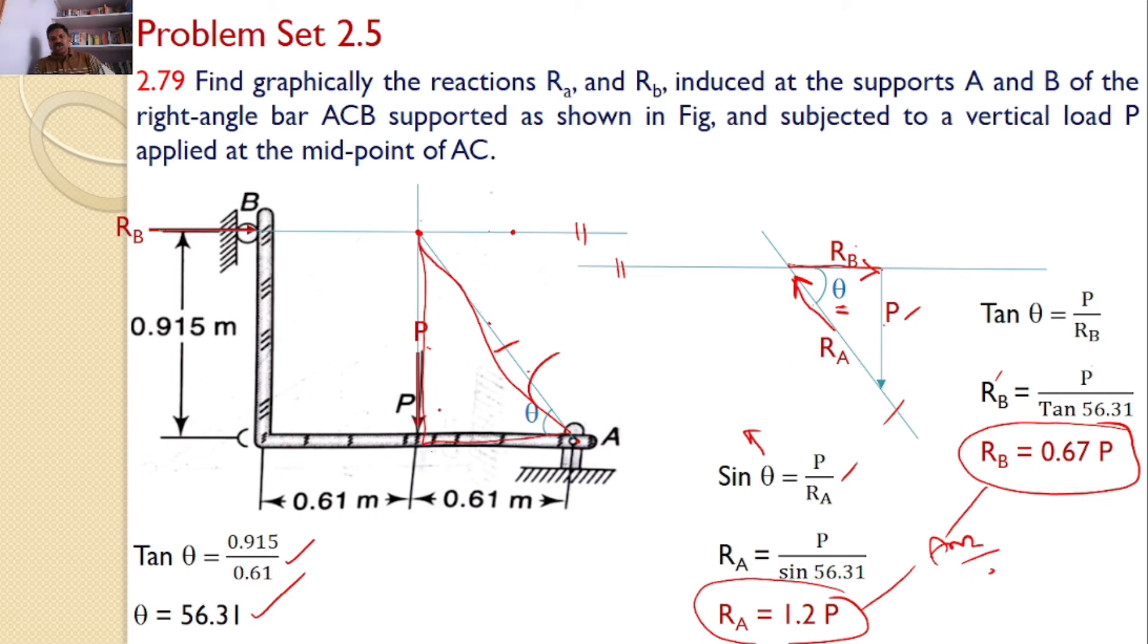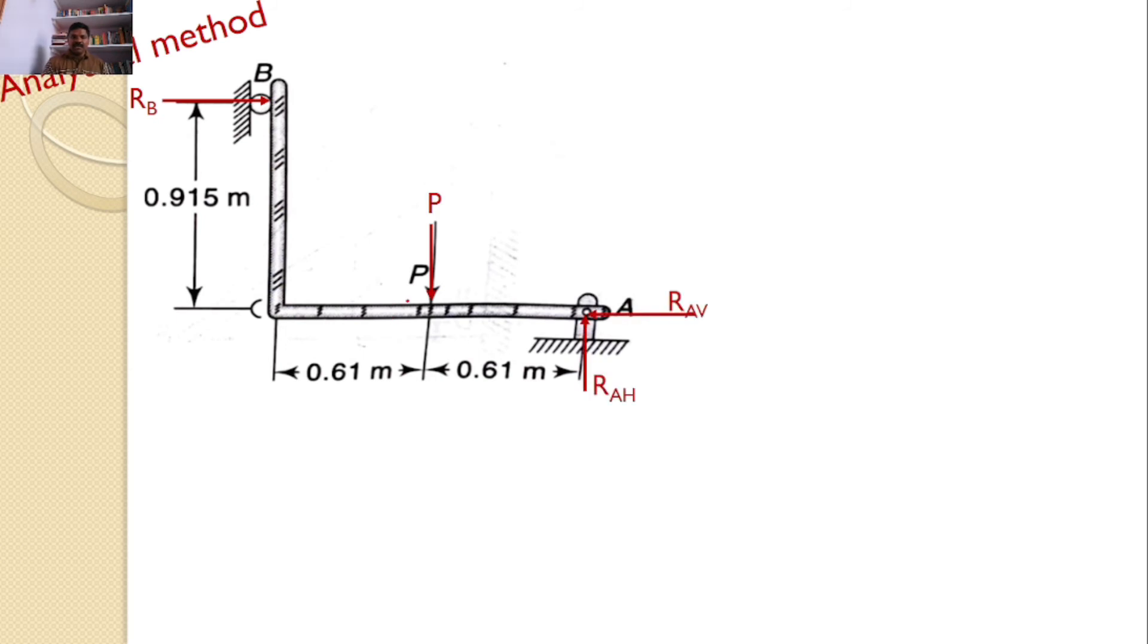I can also solve the same problem using the regular analytical method. Let us see what the various forces are. Rb is a force acting horizontally, P is the vertical force, and at the hinged support we will introduce two reactions, Rah and Rav.